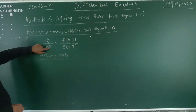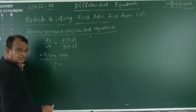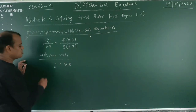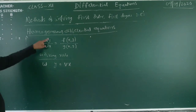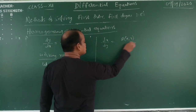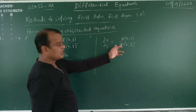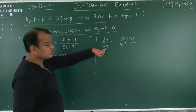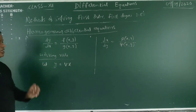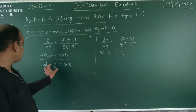Whenever it is a homogeneous equation, a substitution is applied. The dependent variable y = vx, where v is also a function. Let y = vx — this is the substitution for dy/dx type. For dx/dy type, x is the dependent variable, so x = vy.